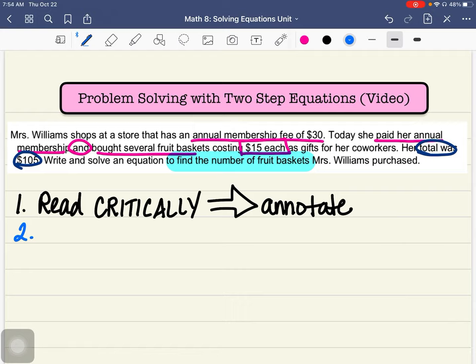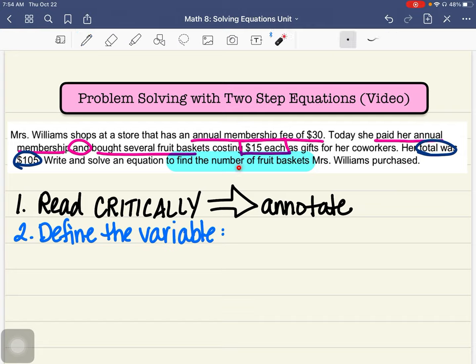Step number two. Students like to skip this step all the time. Not sure why, but they do. And I think it's maybe one of the most important steps. You need to define the variable. What does that mean? That means I'm going to choose my variable and I'm going to write down in words what it represents in this problem. So how do I know what that is? It's what your end goal is. So find the number of fruit baskets. So I'm going to choose the letter F and that's going to represent the number of fruit baskets.